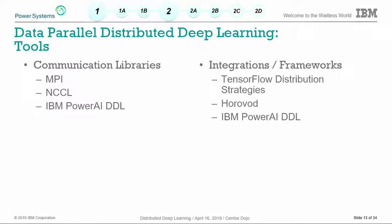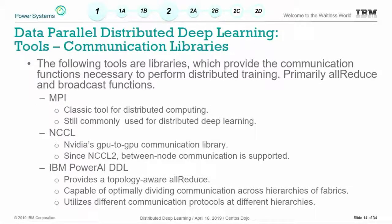Next we'll look at different tools used in data parallel distributed deep learning, mostly to illustrate what they are — because a lot of times people combine these tools thinking they do things they don't. First we have communication libraries, which provide the actual functions that do the communicating — things like all-reduce and broadcast functions. The first on the list is MPI, your classic distributed computing tool, still used a lot in deep learning.